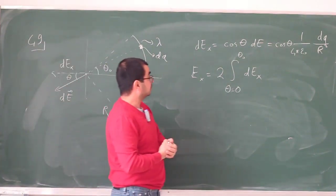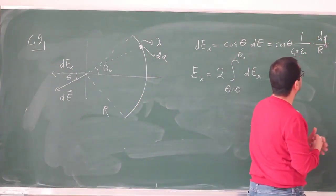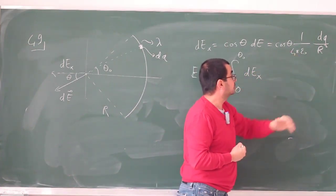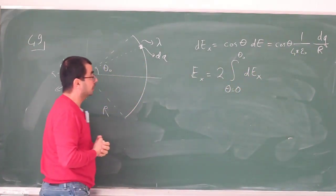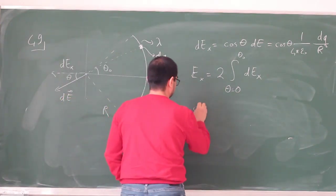So because we are integrating over θ, what we need to do is write this dQ in terms of that θ. We already have this θ over there, but we can take out this 4πε₀ and R squared outside the integral sign. So how do you write that dQ in terms of θ?